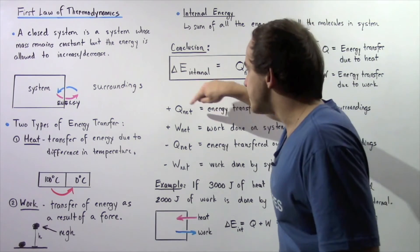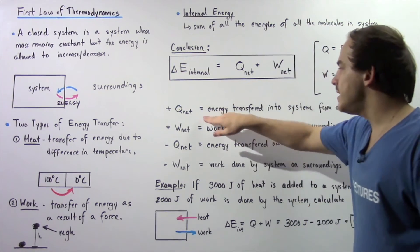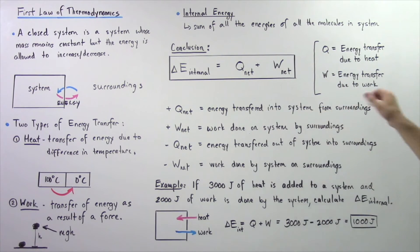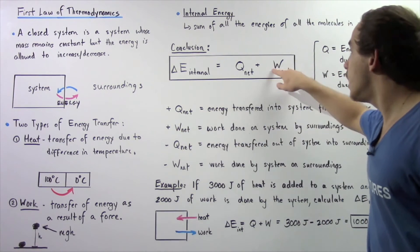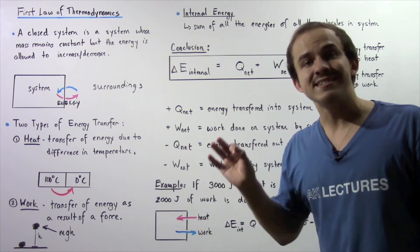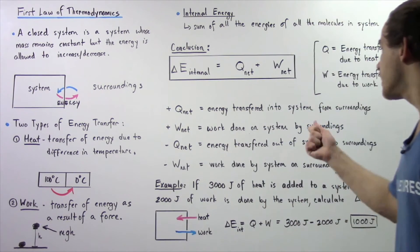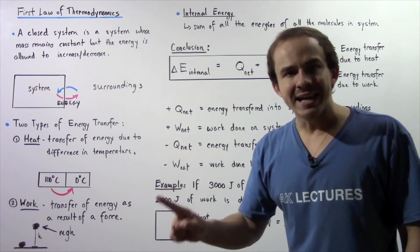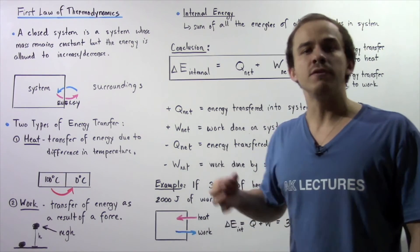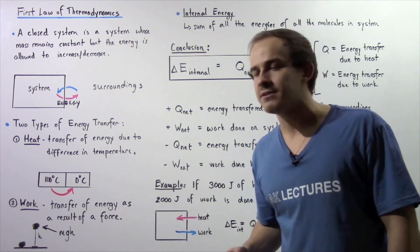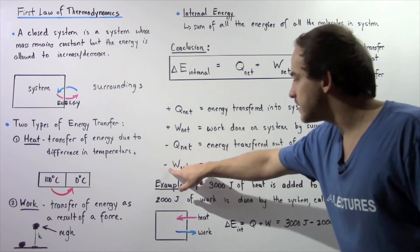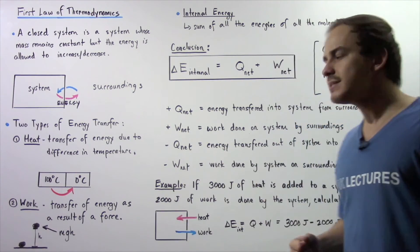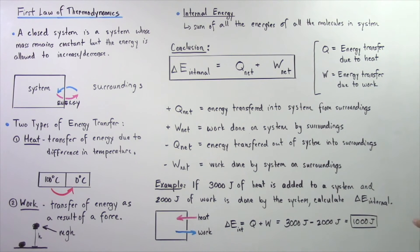If Q net is positive, that means energy is transferred into our system from the surroundings. If W net is positive, that means work is done on our system by the surroundings. If Q net is negative, that means energy is transferred out of our system into the surroundings. And if W net is negative, that means energy is done by our system on the surroundings.